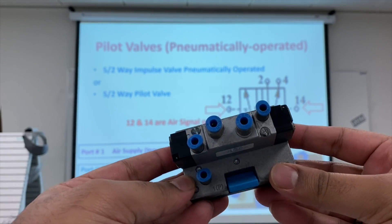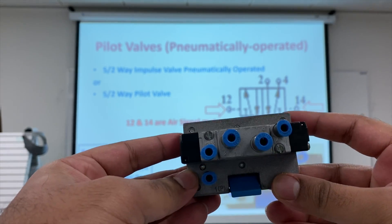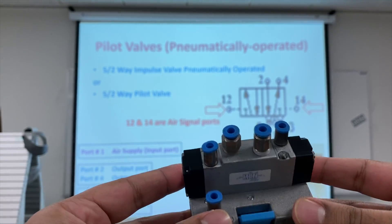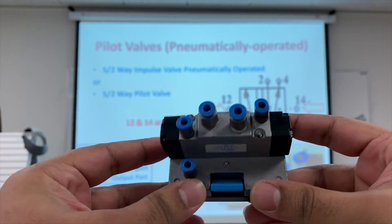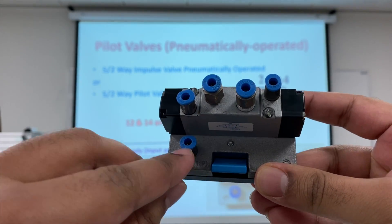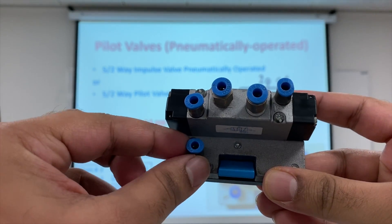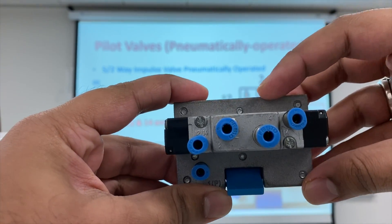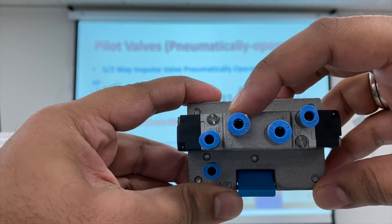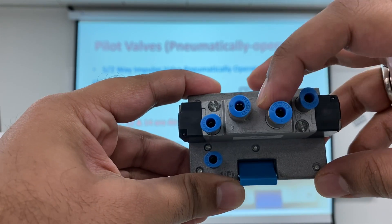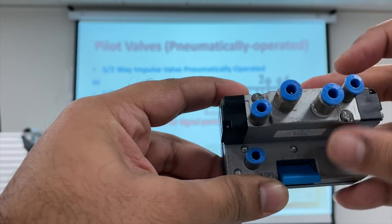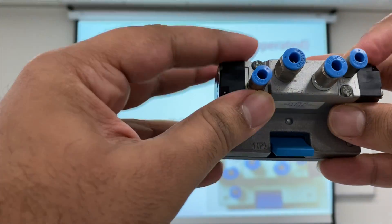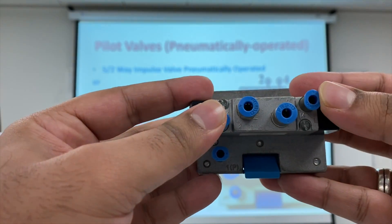What you see in front of you is the five-by-two way pilot valve, or five-by-two way impulse valve. This is port one, where the air supply is connected. Over here we have port two and port four — these are the output ports. And these two ports are port 12 and port 14 — these are the signal ports.